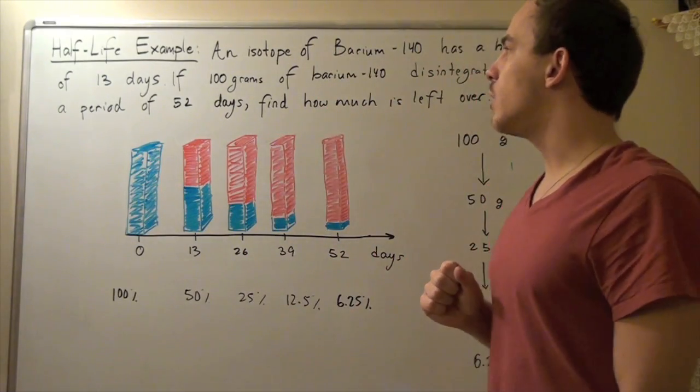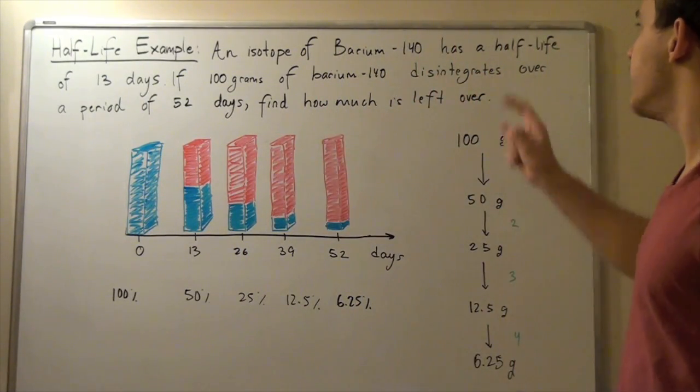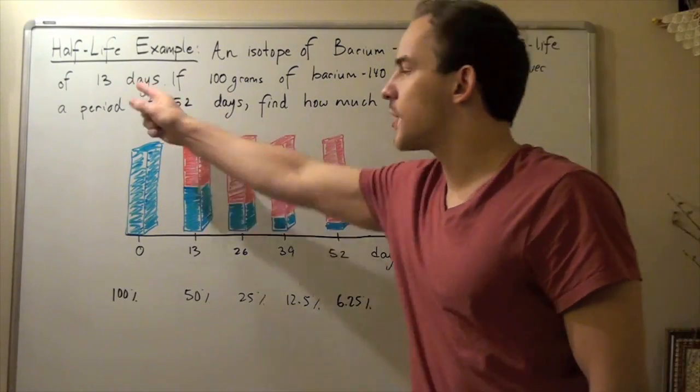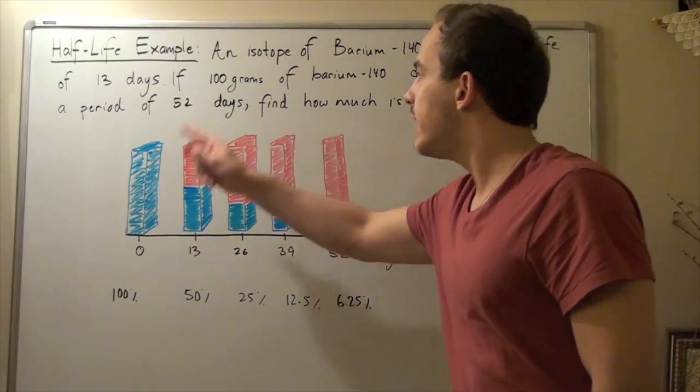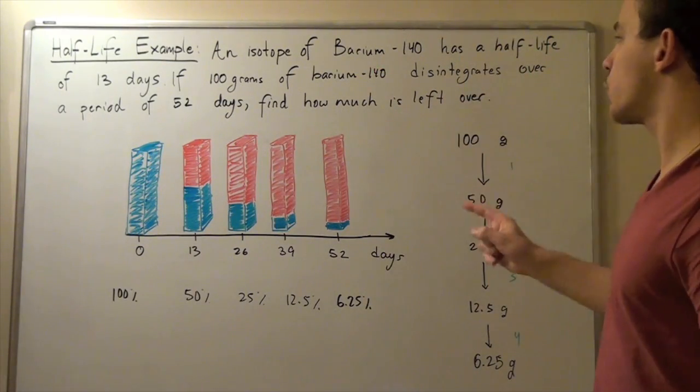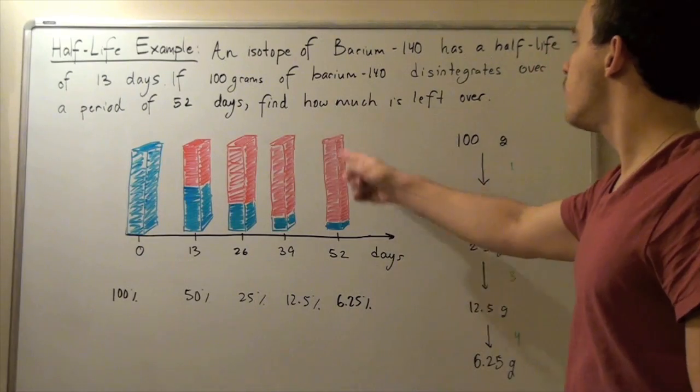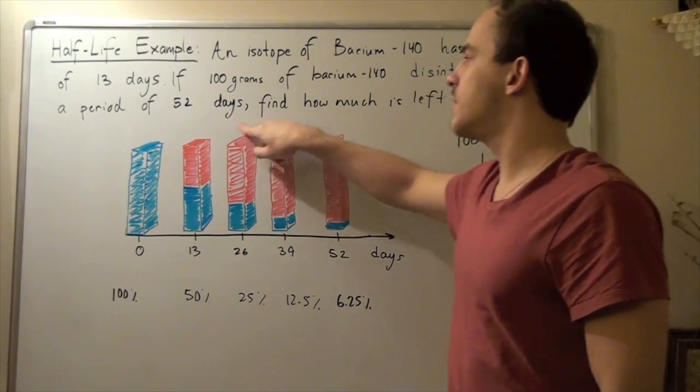So let's look at the following example. An isotope of Barium-140 has a half-life of 13 days. If 100 grams of Barium-140 disintegrates over a period of 52 days, find how much is left over after this period.